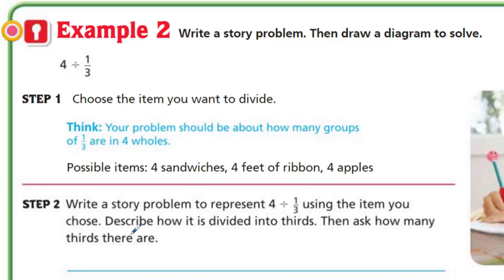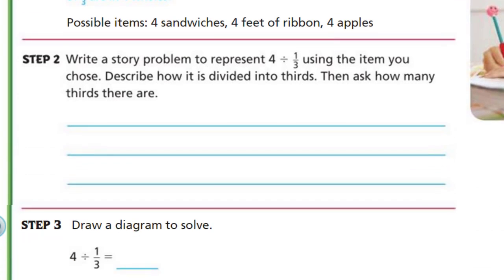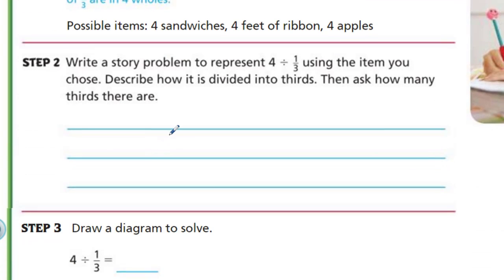To write our own story problem — this will really demonstrate good mastery. So write a story problem to represent four divided by one-third using the item you chose. Describe how it is divided into thirds and ask how many thirds there are. Okay, well they gave us some clues here. I'm an apple kind of guy — an apple a day keeps the doctor away — so I'm going to choose apple.